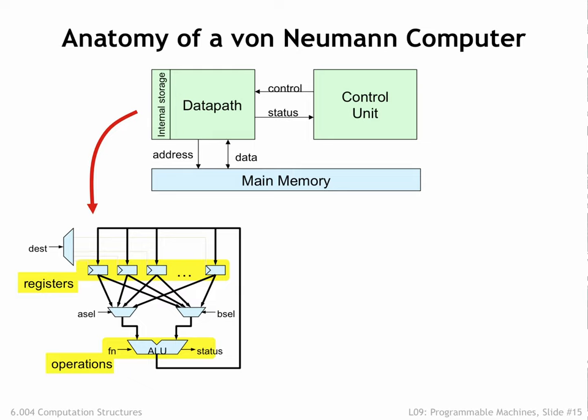If the data path had, say, 32 internal registers, A-cell, B-cell, and DEST would be 5-bit values, each specifying a particular register number in the range 0 to 31. The control unit also provides the FN function code that controls the operation performed by the ALU. The ALU we designed in part 1 of the course requires a 6-bit function code to select between a variety of arithmetic, Boolean, and shift operations.